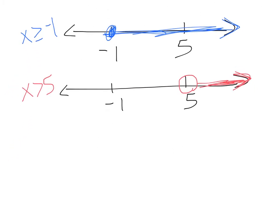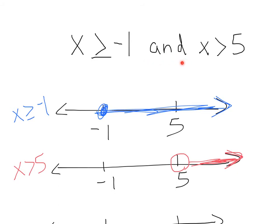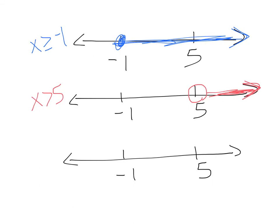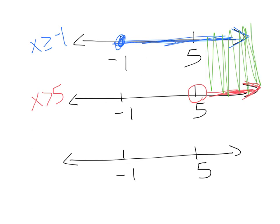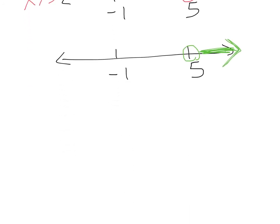Now for our final number line with important numbers negative 1 and 5. This is an and, so we want what makes both things true — what they have in common. Looking at the number lines: these portions are not in common until we get to 5, where they start to overlap. Our final answer has an open dot at 5, because 5 is not included, and everything is shaded to the right. Going left to right, we only have values greater than 5, so our final answer is x is greater than 5.